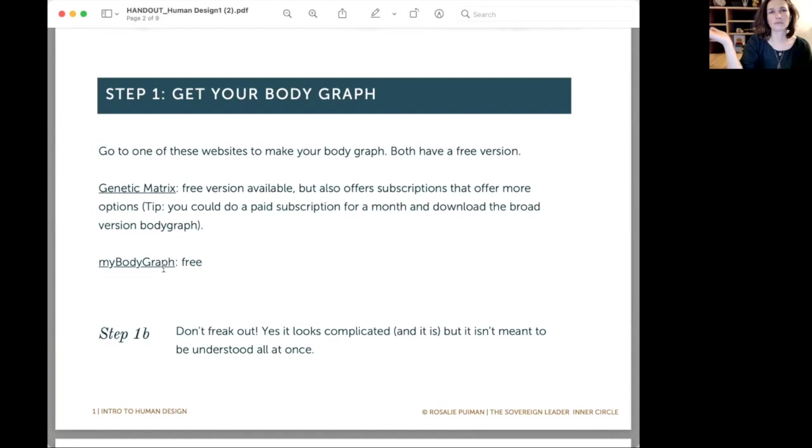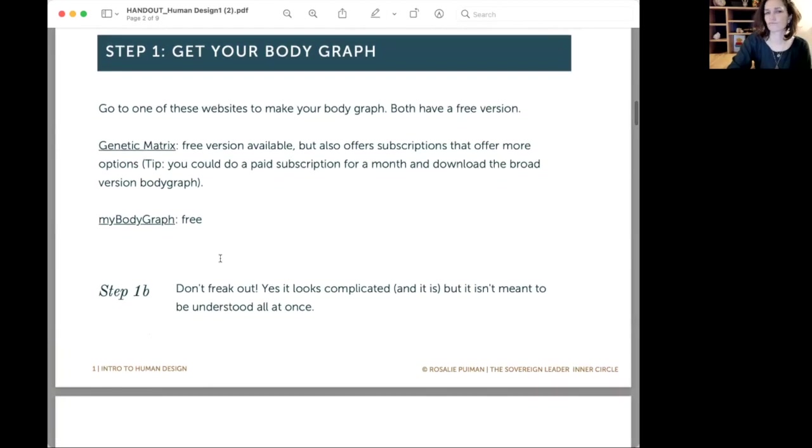Just use the time if you know it. And otherwise you can fill in what I sometimes do actually is fill in three times like 12 midnight, 12 afternoon, and then something like 6 PM or so to see the differences. And as I said, in the type of authority and not self theme and such that won't make a difference most of the times. So step one B I added here, and I would like to add that for you as well. Don't freak out. Yes, it's complicated. There's so much to it. But human design is not meant to be understood all in one go.